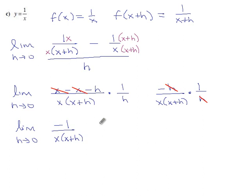If h goes to 0, that just vanishes and we end up with our derivative dy dx being minus 1 over x squared.